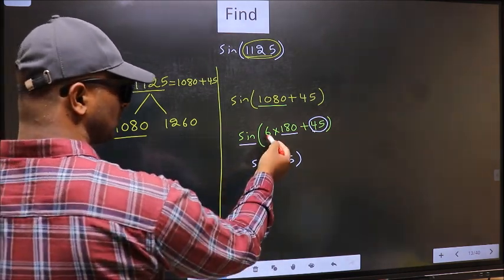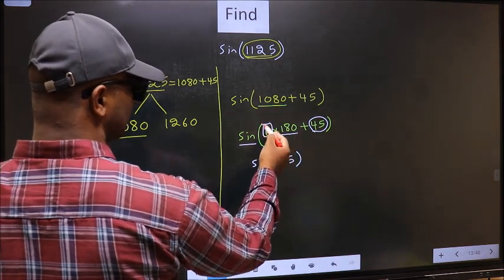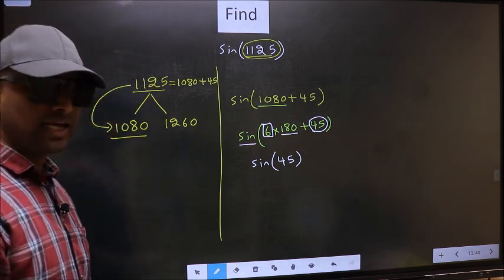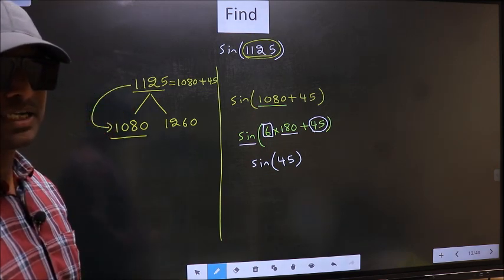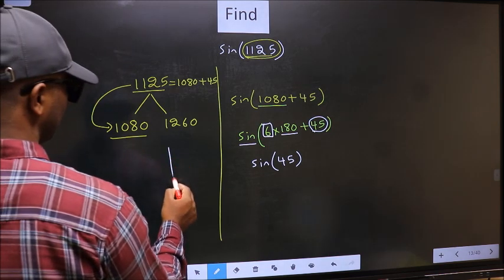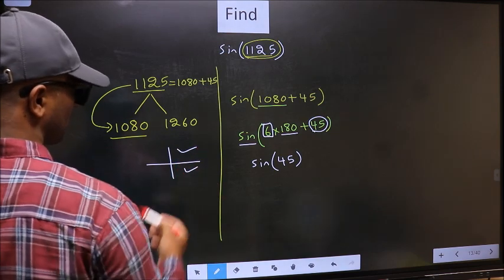To answer that, we should look at the number before 180, that is 6. And 6 is even, and all the even multiples of 180 lie either in the first or in the fourth quadrant.